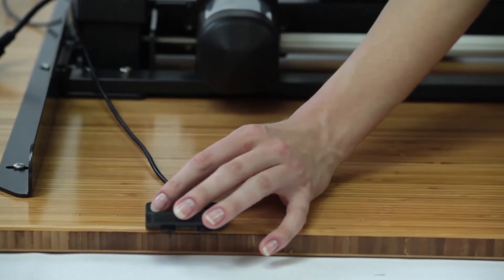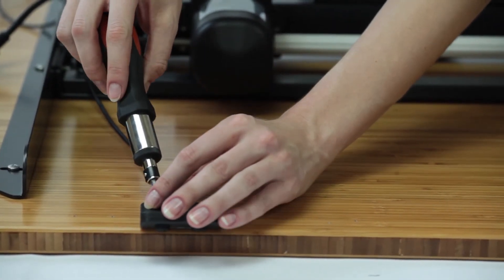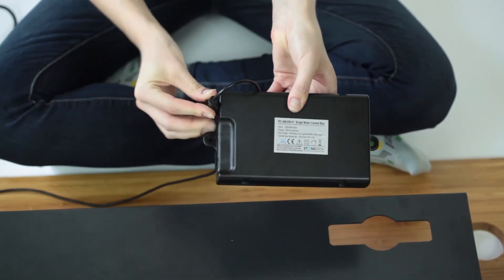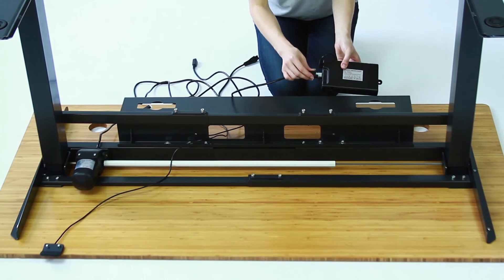The control box can also sit in the cable management tray if you bought one of those. To attach the handset to the top use two ST 3.5 by 19 screws. Now just connect the cords from the control box to the handset and the leg with motor.